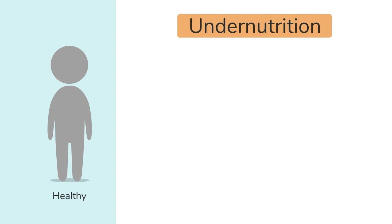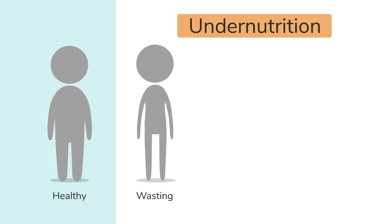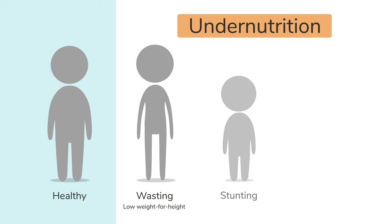First, undernutrition for a short time can cause wasting, which is a low weight for height — the child will appear thin. If a child does not get enough nutrients for a long time, this affects their growth and they may be stunted, which means having a low height for age. They will look short for their age.